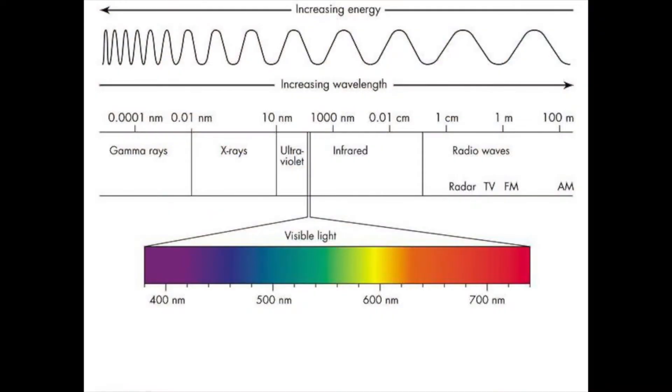There's a whole bunch of stuff there. First off, when we say radiation, we're talking about electromagnetic radiation — visible light, infrared, ultraviolet, gamma rays. We're not talking about nuclear power plants or atomic bombs or any of that yet.